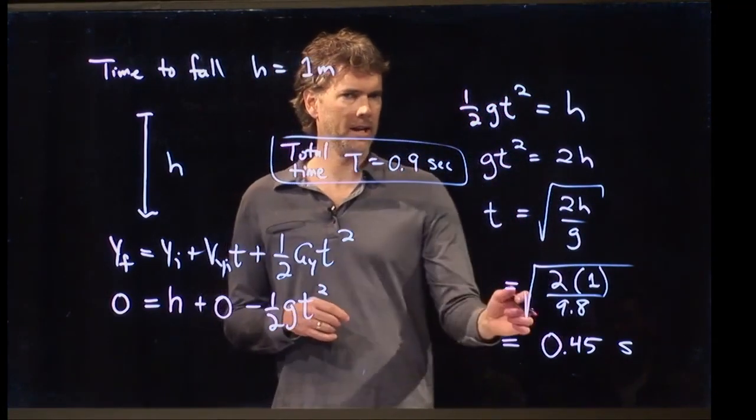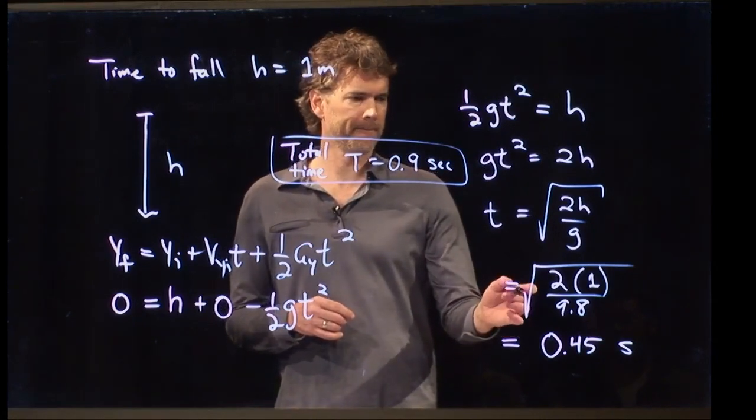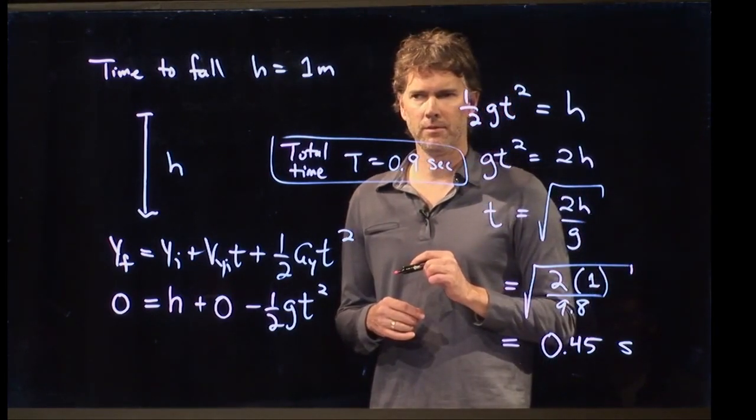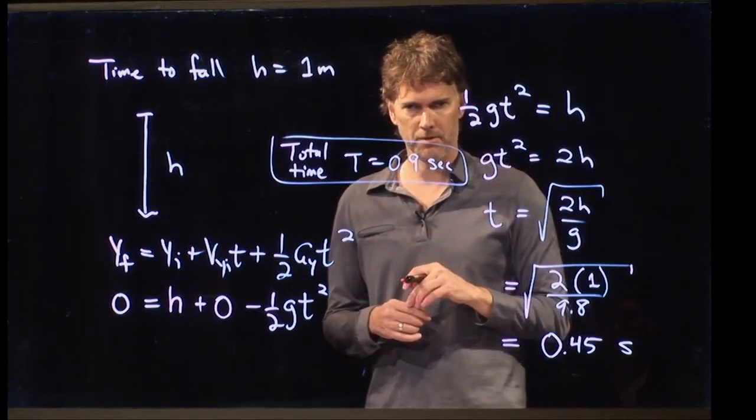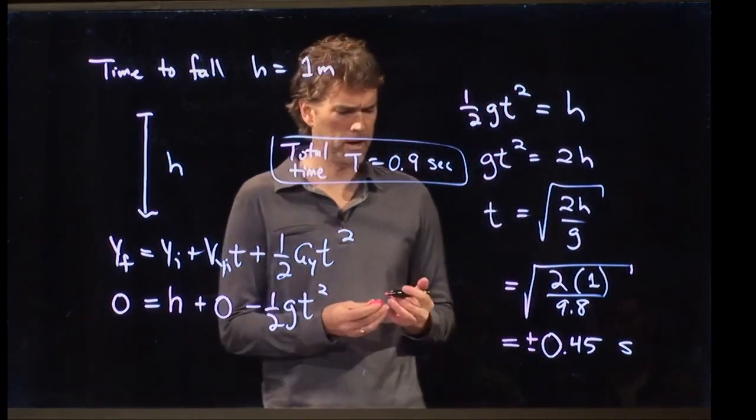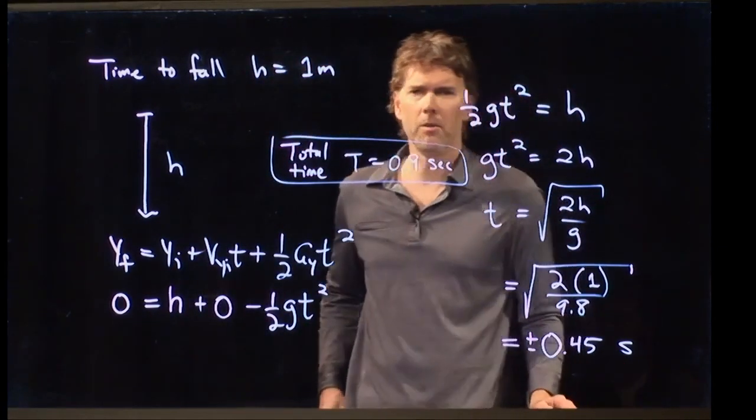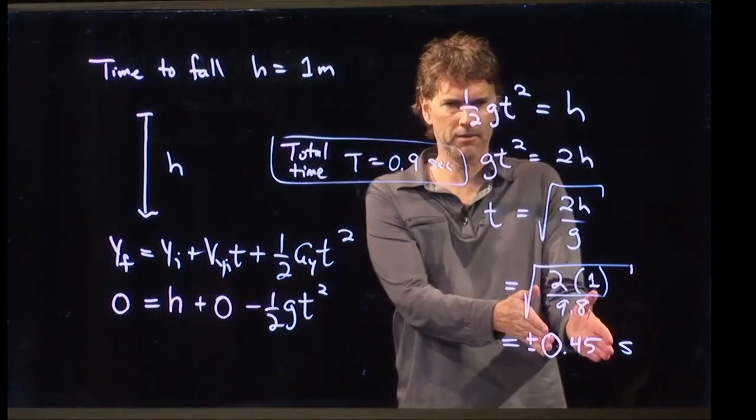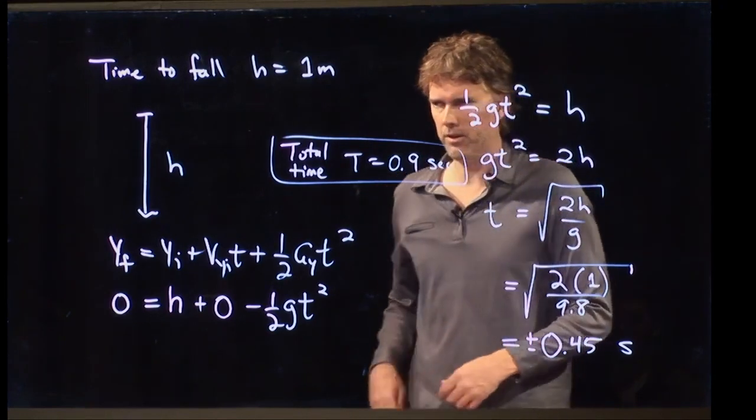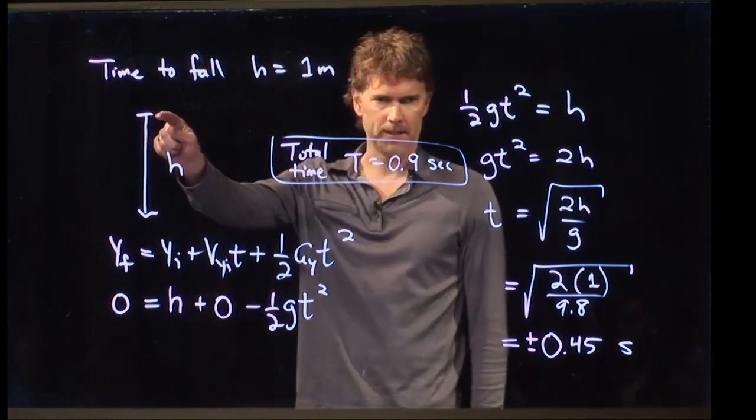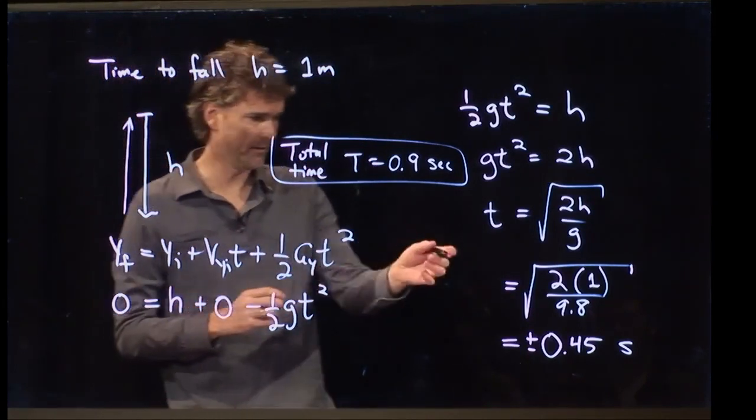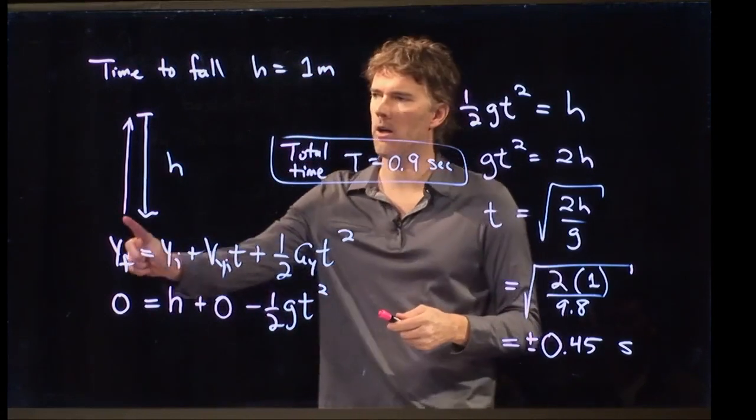Now, there's something a little interesting about our answer down here, which is the following. When we did the square root, what do you get when you take a square root? Exactly. Plus or minus. So, really, we should put plus or minus here. And now you say, well, wait a minute. What is the significance of the minus? We just assumed that it was positive 0.45 seconds. But there's a minus there. Does that have any physical significance? We set the clock to t equals 0 up at the top. But if I run that clock backwards in time, that minus 0.45 exactly corresponds to how long it took them to go up.